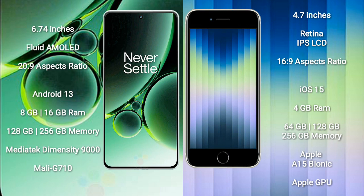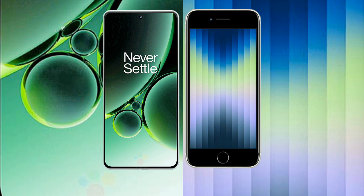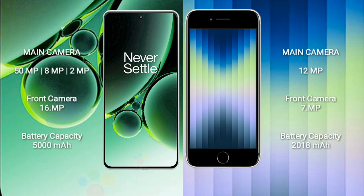OnePlus Nord 3 features a triple rear camera setup: 50MP plus 8MP plus 2MP, and a 16MP front camera. iPhone SE 2023 features a single rear camera setup at 12MP, and a 7MP front camera.